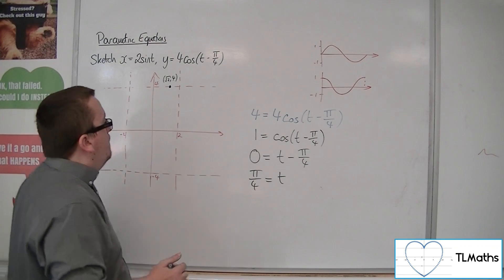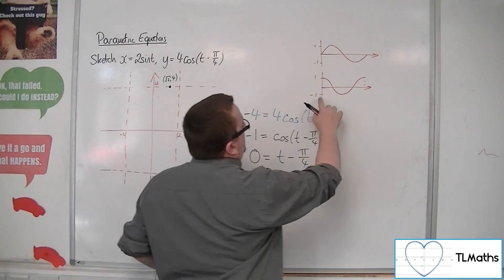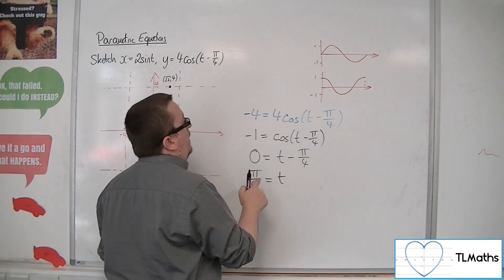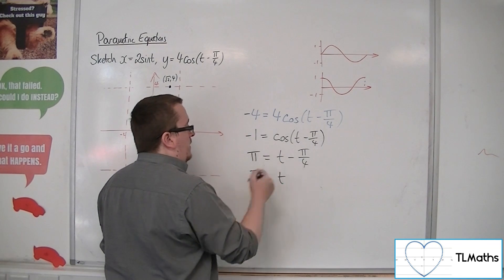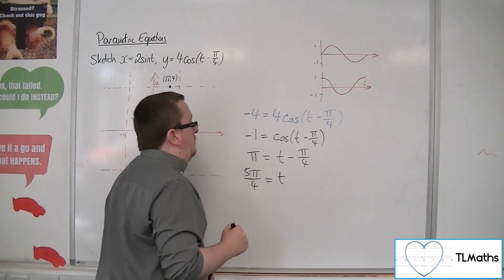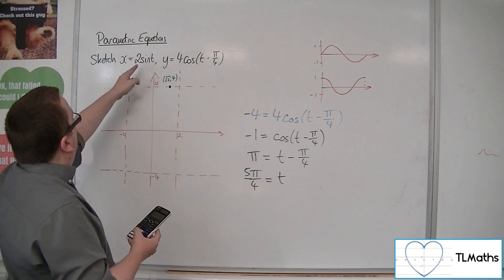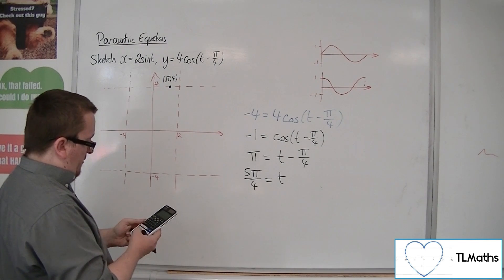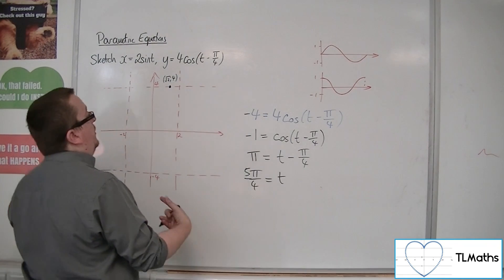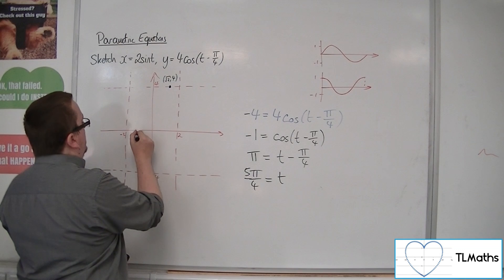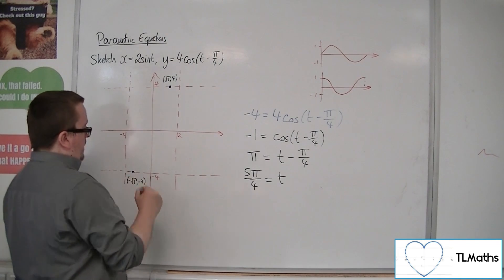Now how about when we've got minus 4? Well if we change this to minus, it'll hit minus 1 when we're at pi. So if I pop pi there, then adding pi over 4, I get 5 pi over 4. So using 5 pi over 4, substituting into this, we get 2 lots of sine of 5 pi over 4, which is minus root 2. So minus root 2 minus 4 gets me my second point down here.